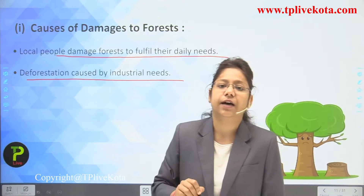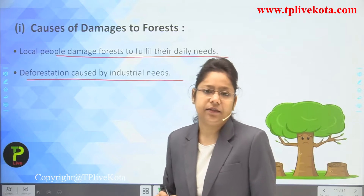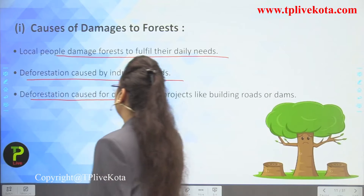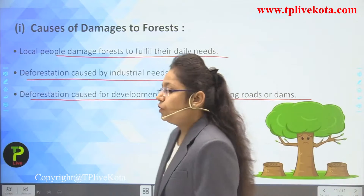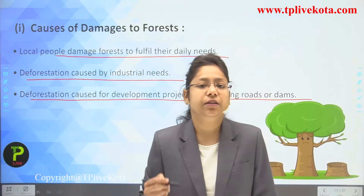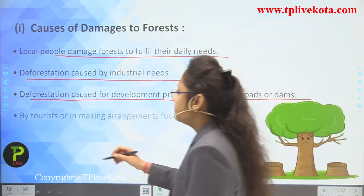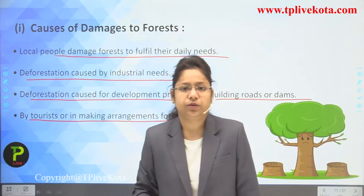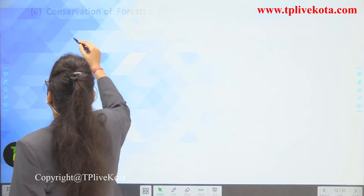Deforestation is caused by industrial needs — industries greedily cut trees rapidly. Deforestation also occurs for development projects like building roads or dams, and by tourists or in making arrangements for tourists.